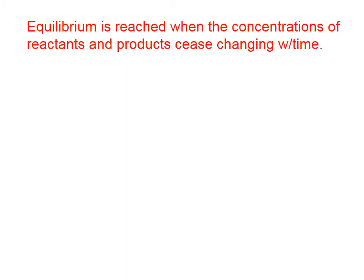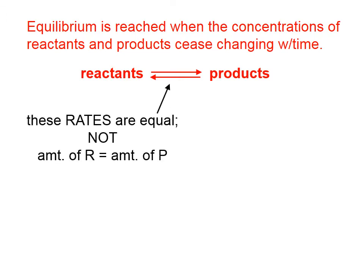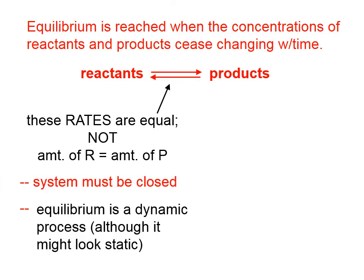Equilibrium is reached when the concentrations of reactants and products cease changing with time. In other words, the rates at which reactants are turning into products and products are turning back into reactants are equal. Equilibrium does not mean that the amount of the reactants is equal to the amount of products. Typically, for equilibrium, the system has to be closed. It is a dynamic process, although it might look static.